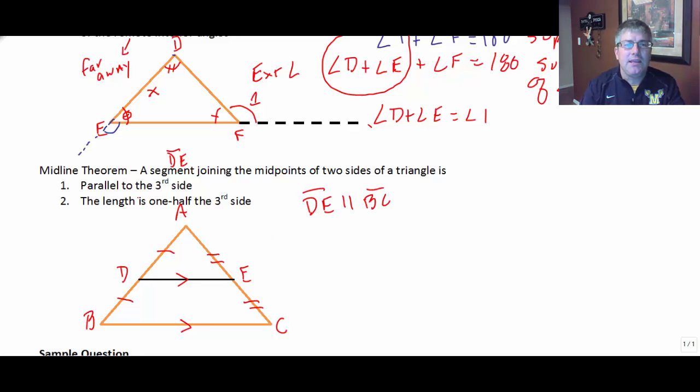And then DE is one half the length of the third side. So BC is equal to two times DE. Or BC over two equals DE. So if DE is 10, we know BC has to be 20 because of the midline theorem.